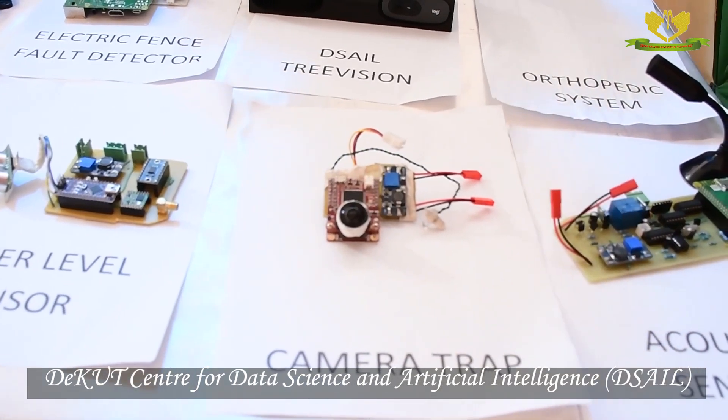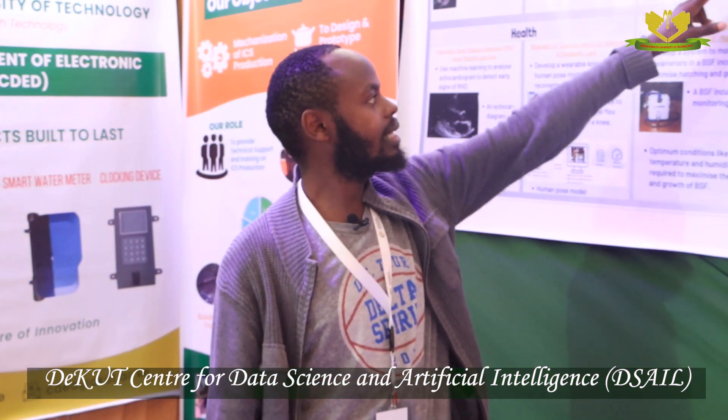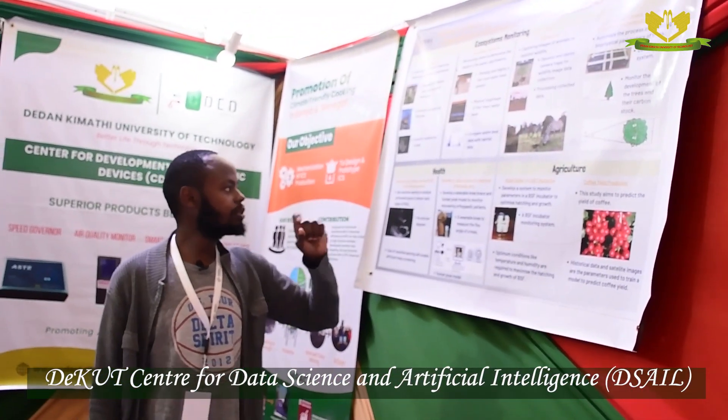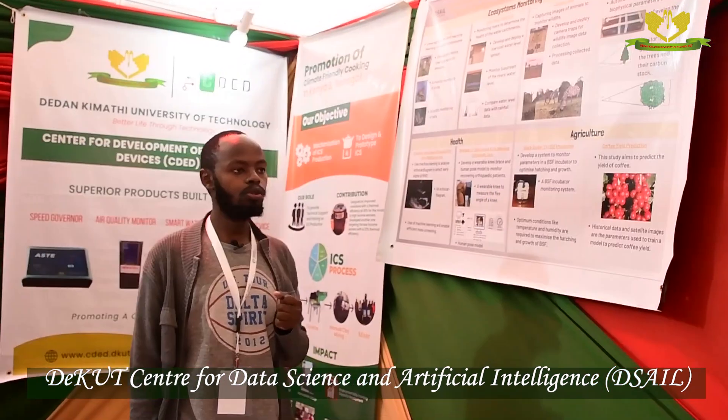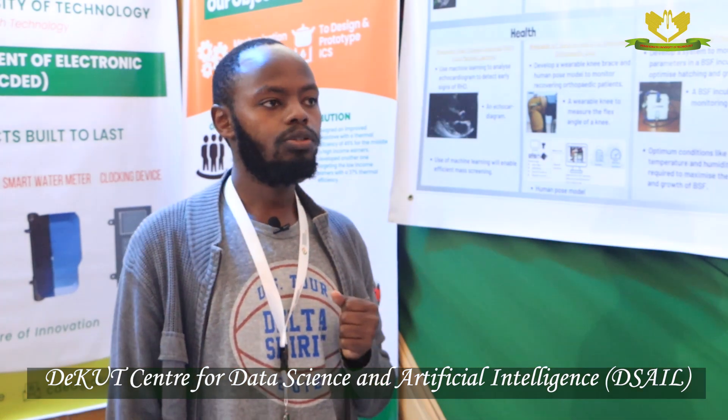The other approach we use is wildlife image data. We have developed two types of camera traps — one based on the OpenMV and another based on the Raspberry Pi. We deploy the camera traps in the University's Conservancy to collect wildlife image data. Here is sample data collected from the Conservancy: we have an Impala, a bushbuck, and a zebra. We use machine learning to do object detection of individual animals in a frame and then proceed to classification of individual species, allowing us to assess the biodiversity of the Conservancy and monitor trends.